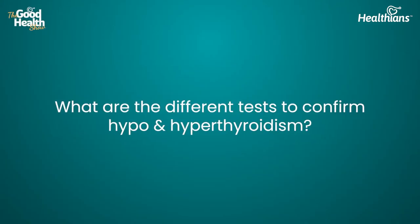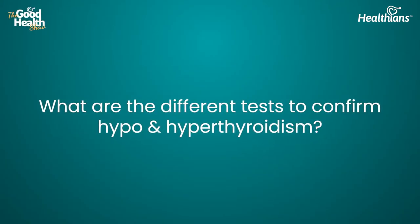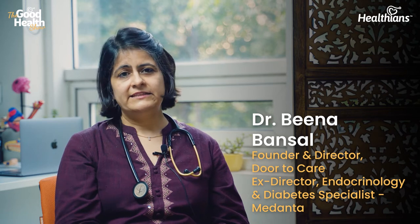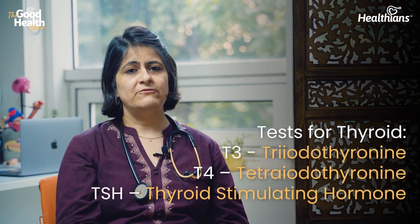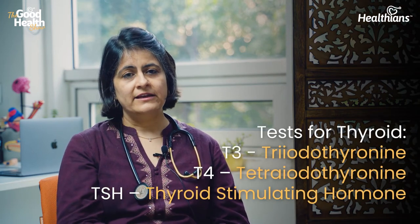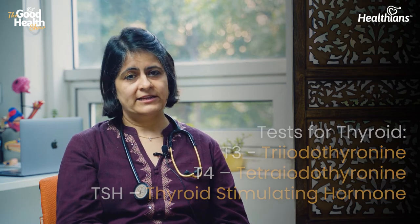The tests for thyroid are T3, T4, and TSH. T3 is triiodothyronine, T4 is tetraiodothyronine — meaning it has four iodine molecules — and TSH is thyroid stimulating hormone. These three tests give us a lot of information about thyroid function.